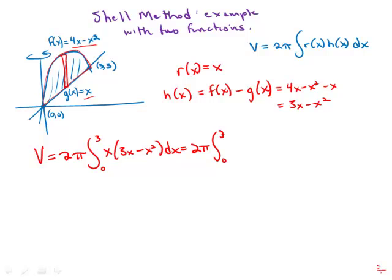We'll multiply out in the integral. We get 3x squared minus x cubed dx.